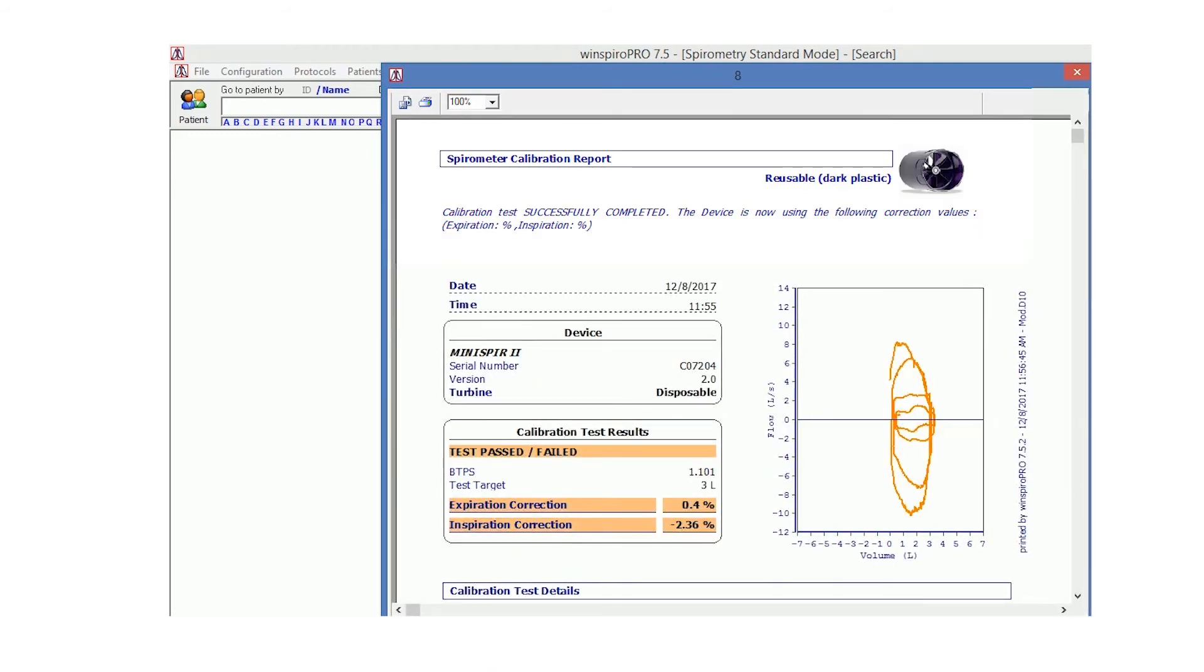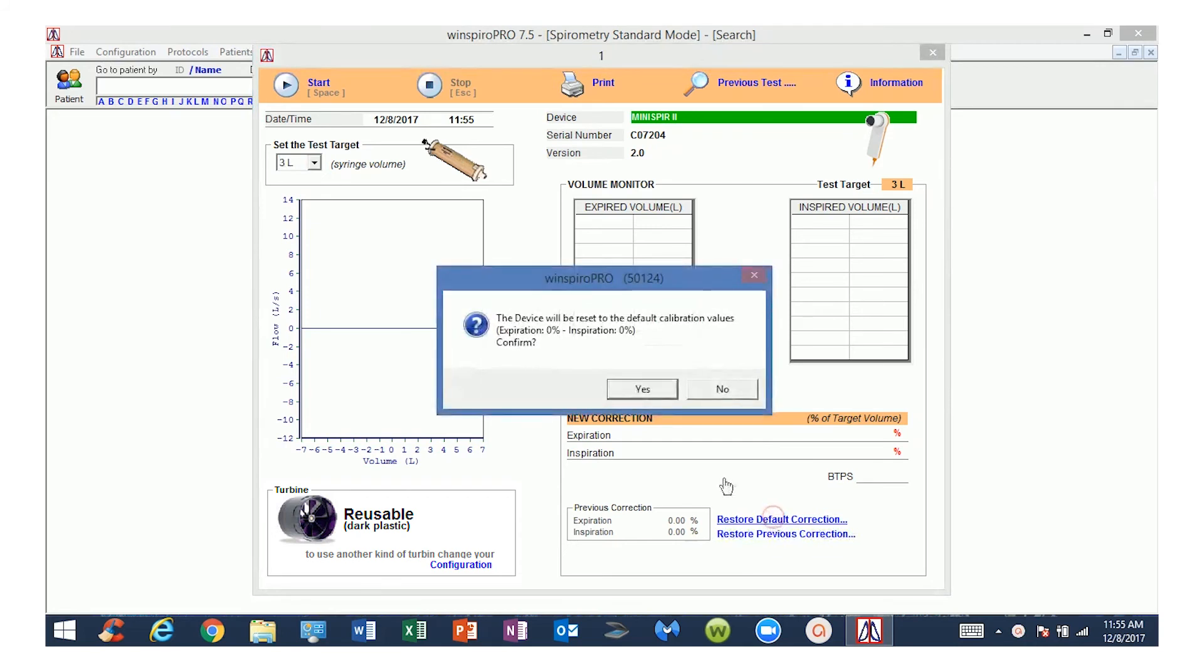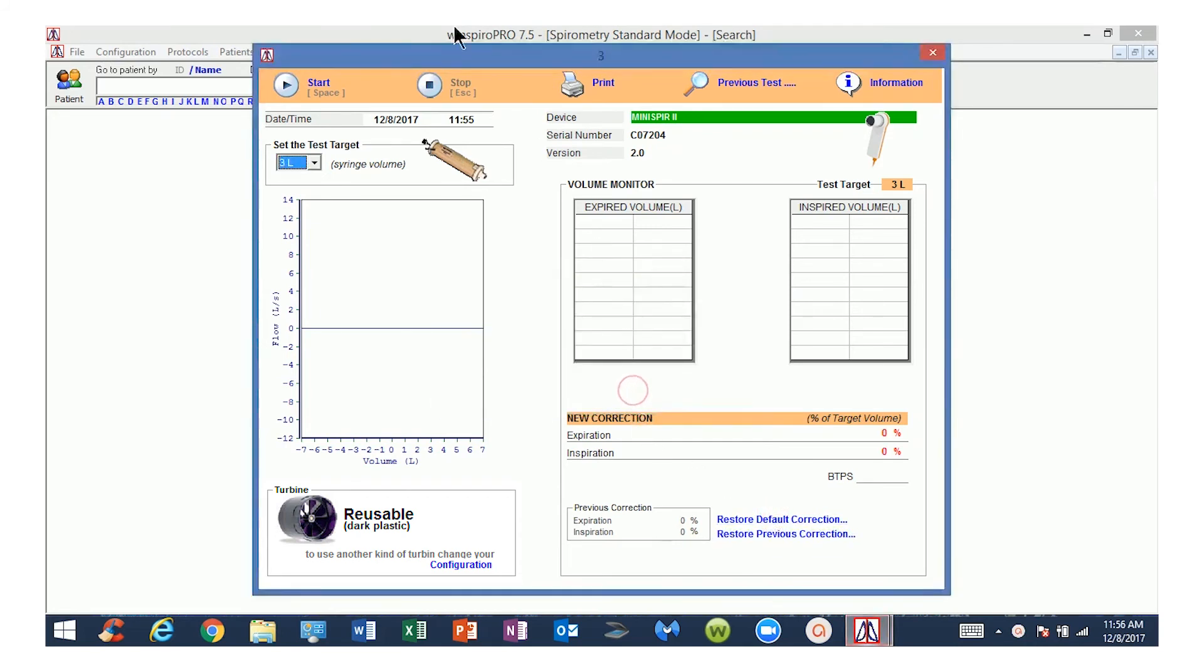If the results are outside the plus or minus three percent range, then repeat the test for a second time by resetting to default correction and starting the test again.